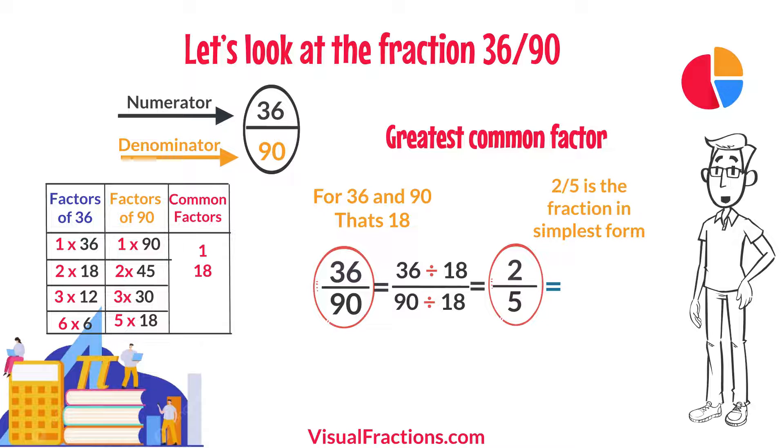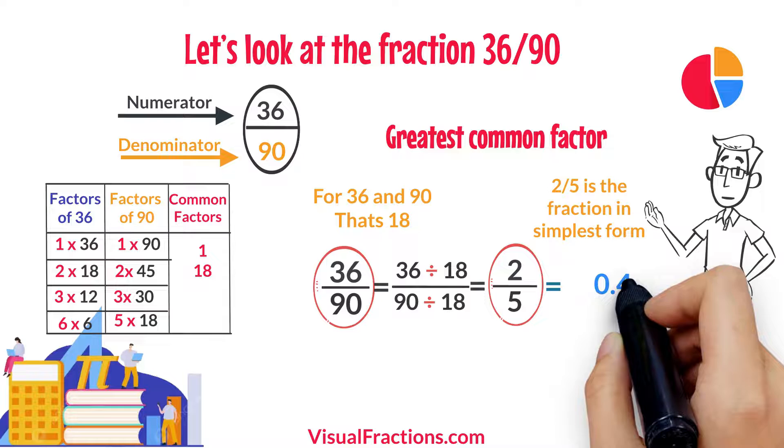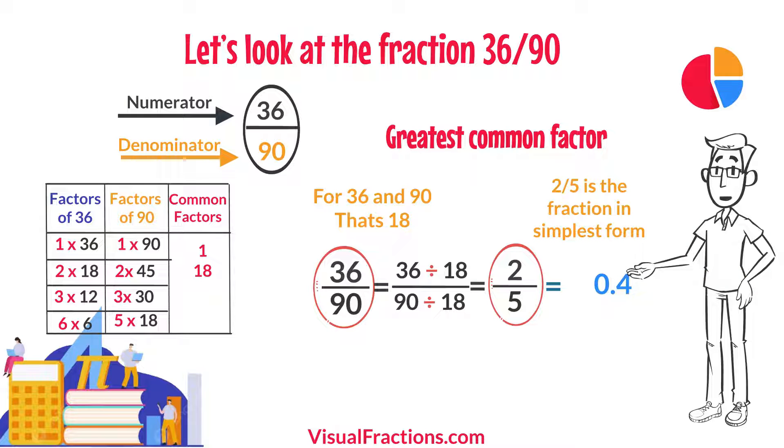It's interesting to note that both the original fraction 36/90 and the simplified fraction 2/5, though different in appearance, represent a similar value when compared as decimals. The exact decimal for 2/5 is 0.4. This shows that although their appearance may change, their value remains consistent.